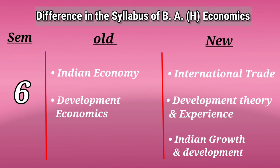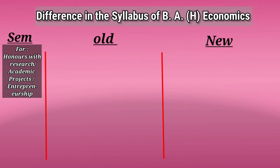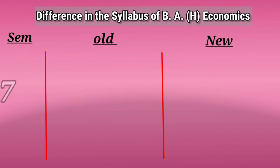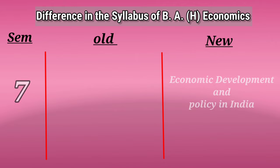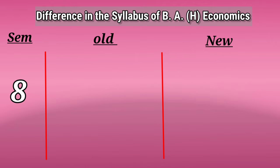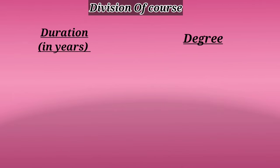Till now the course was only for three years, and even now it is three years only for Economics Honours. But if you want the degree for Honours with Research, Honours with Academic Projects, or Honours with Entrepreneurship, you can go for the fourth year as well — it is an option. In the fourth year, Semester 7 the subject will be Economic Development and Policy in India, and in Semester 8 it will be Topics in Development and Policy.